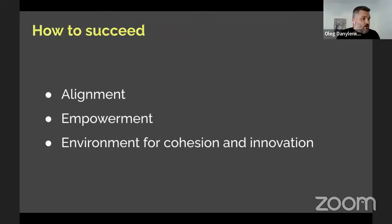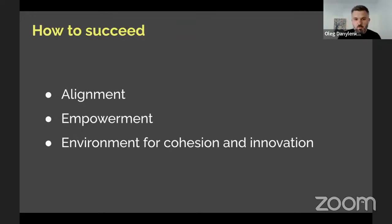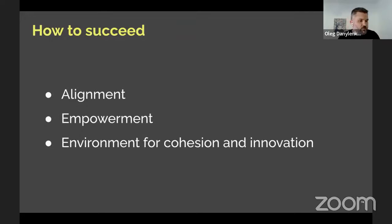So how do you go about solving those problems? I'd focus on three things: first, alignment; second, empowerment; third, creating an environment for cohesion and innovation within teams. These might seem familiar because they're not much different from what you need to succeed in any team, even collocated. But the way you get there is different, and most importantly you need to be much more intentional about it. Let's deep dive into how we actually achieve those things.